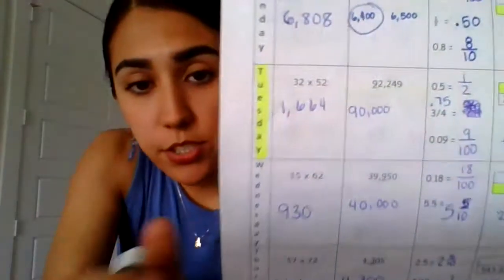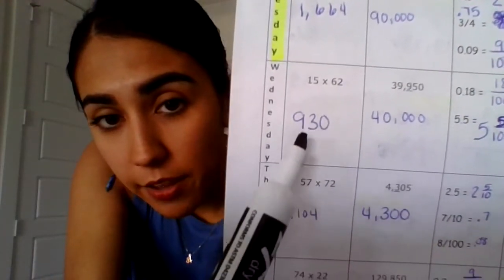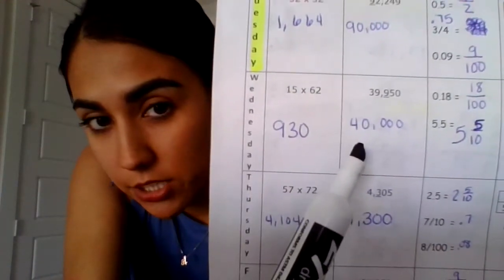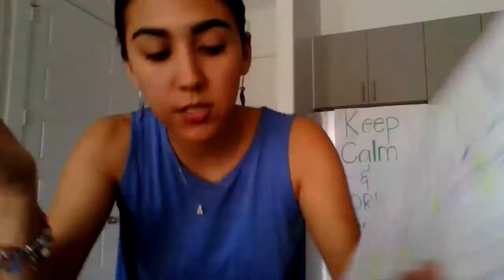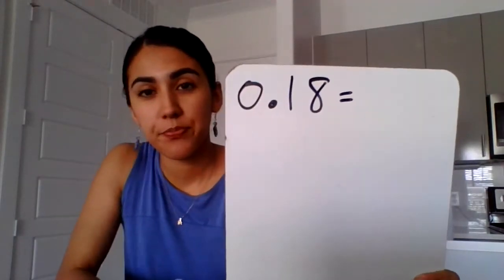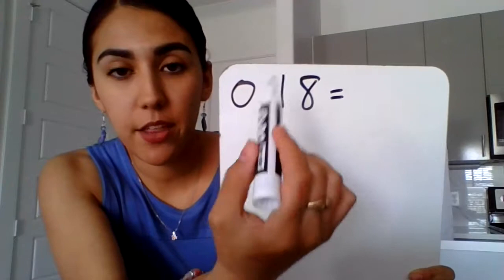Awesome sauce. All right. So here are the answers for that first one, 930. And here's the answer to the second one, 40,000. Let's go over to the next column. And this column is labeled decimals and fractions. And they want to know, boys and girls,